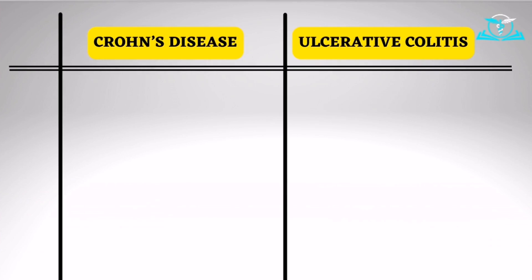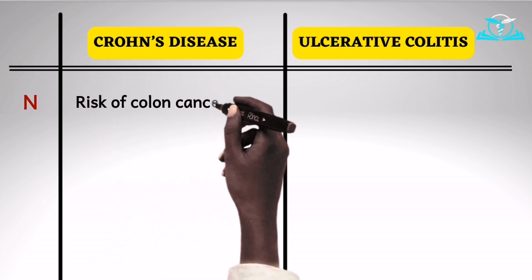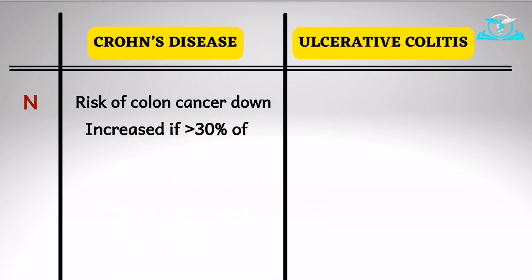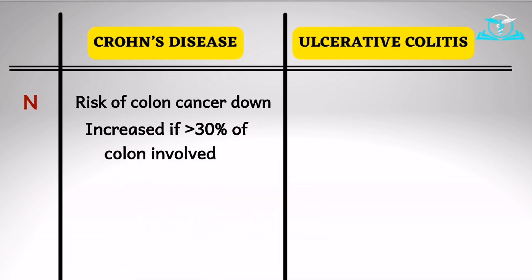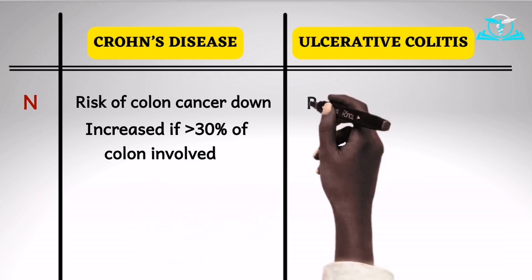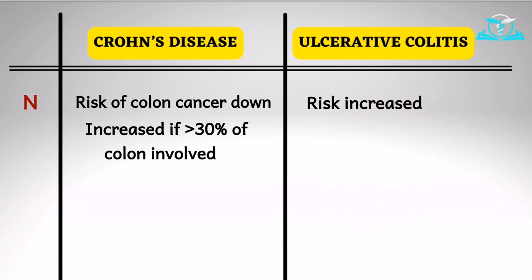We are down to our last letter in the mnemonic: N for neoplasia. Between Crohn's disease and ulcerative colitis, which one has the higher propensity of becoming neoplastic? In Crohn's disease, the risk of colon cancer is generally low, though it may be increased if around 30% of the colon is involved. In ulcerative colitis, the risk is generally increased. Although we didn't cover it today, the extra-intestinal manifestations of inflammatory bowel disease are more likely with Crohn's disease than in ulcerative colitis — we will cover that in our next video.